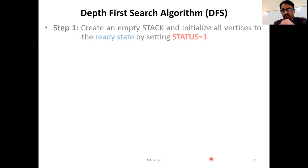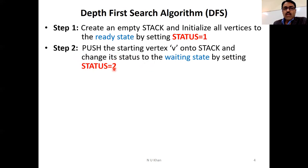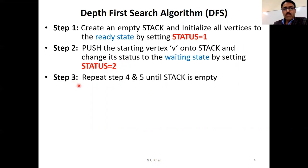Now the DFS algorithm. Step one: create an empty stack and initialize all vertices to the ready state by setting status equal to one. All nodes in the graph are given a flag value of one, meaning they are ready to visit. Step two: choose the starting vertex, push it onto the stack, and change its status to the waiting state by setting status equal to two.